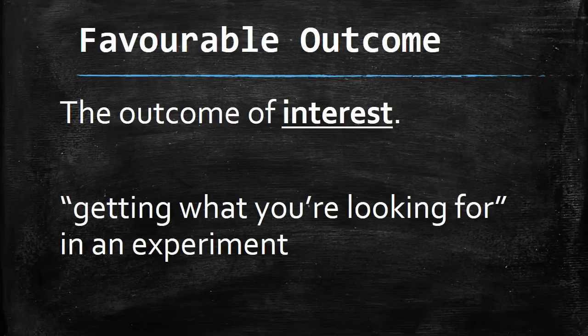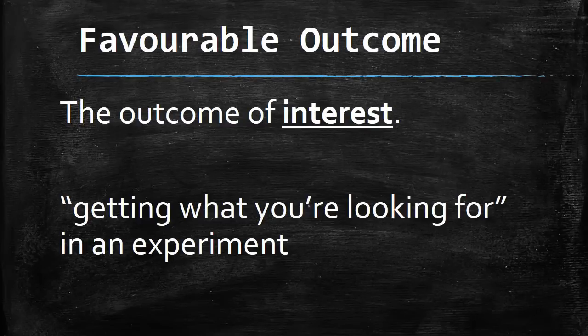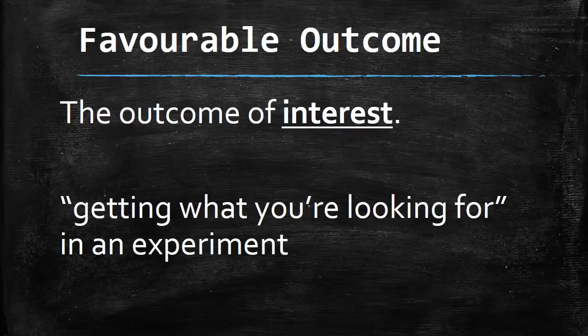For example, if you're flipping coins and looking at how many times heads shows up, that is your favorable outcome. Although tails could be your favorable outcome. You just have to decide or be told in the question what your favorable outcome will be.